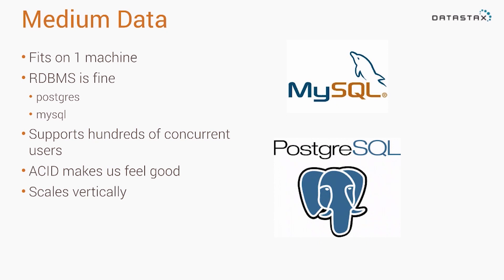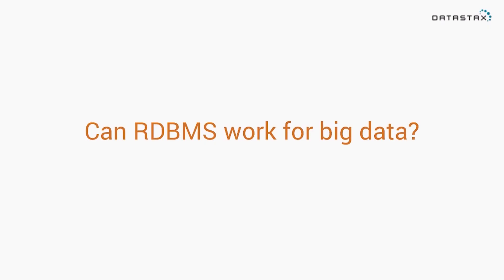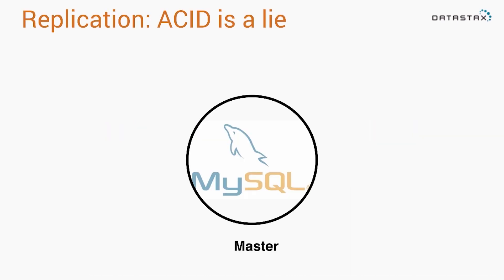The way we typically try to scale these first is by scaling vertically — buying more expensive hardware, like more memory or a bigger processor. This can get really expensive really quickly. The question we now ask ourselves is: can the relational database work for big data? The first thing we find when we start applying a relational database to big data is that ACID is a lie.